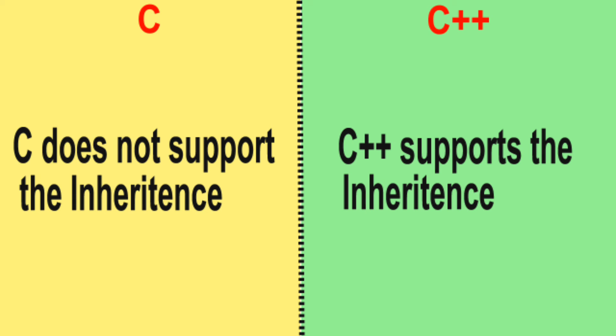Difference number 12: C does not support inheritance. C++ supports inheritance.